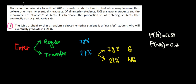Let's have a look at question 3 in this video. A university found that 78% of transfer students eventually graduate.